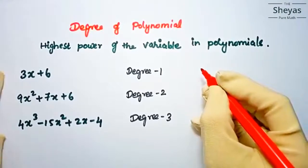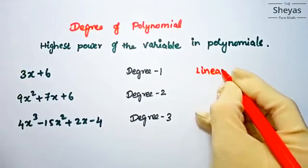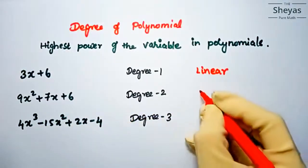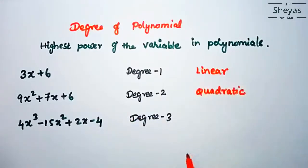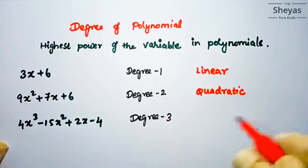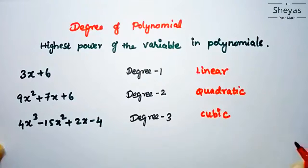If the degree is 1, we call it a linear polynomial. If the degree is 2, we call it a quadratic polynomial. If the degree is 3, we call it a cubic polynomial. And if the degree is 4, we call it a biquadratic or quartic polynomial.